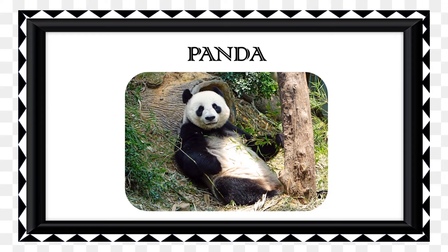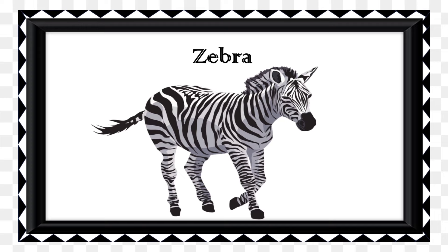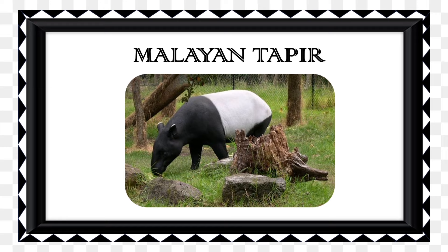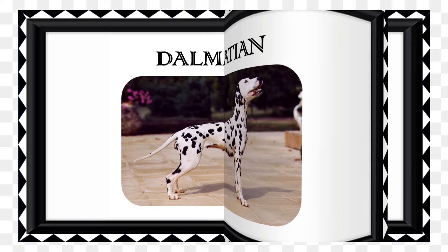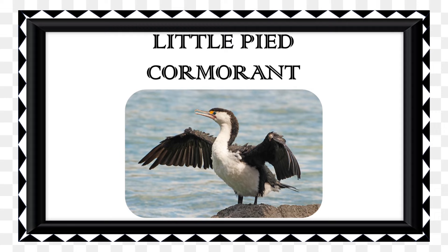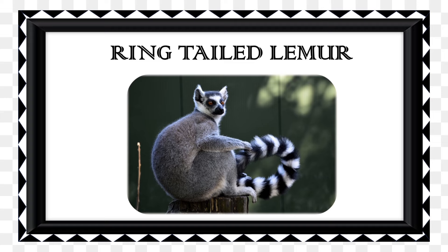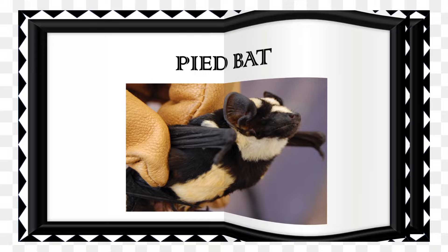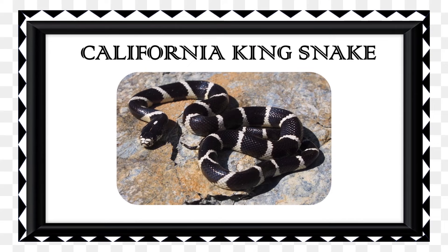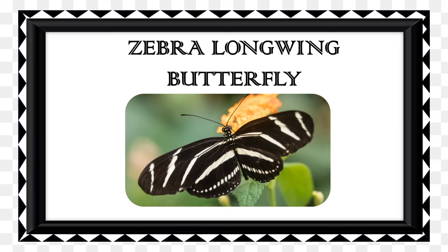The young one of a cheetah is called a cub. Black and white animals: Orca. Panda. Zebra. Malayan Tapir. Dalmatian. Skunk. Little Pied Cormorant. Giant Leopard Moth. Ring-Tailed Lemur. Pied Bat. Penguin. California King Snake. Zebra Longwing Butterfly. Black and White Colobus Monkey.